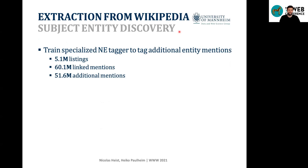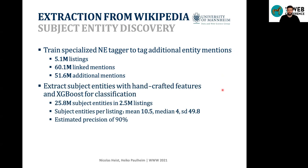In the subject entity discovery step, we train a specialized named entity tagger to find unknown entities in listings in addition to those already tagged by Wikipedia with wikilinks. In total we find 5.1 million relevant listings with 110 million mentions overall. For the subject entity classification we use an extremist classifier with handcrafted features, resulting in 25.8 million subject entities from 2.5 million listings with a precision of roughly 90 percent.